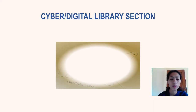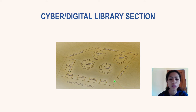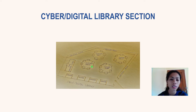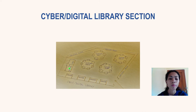The cyber or digital library section has a large main area. As you enter, you can see circular arrangements of tables, seats, and computers where students can use computers to search, do word processing, Excel, and more. The area also has printers and scanners, providing scanning and printing services. There is a librarian's table and a waiting area for students when computers are all occupied.